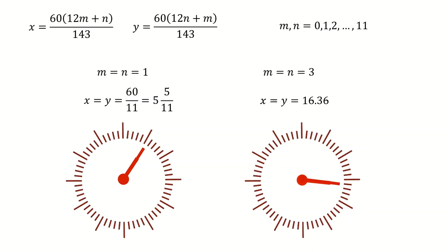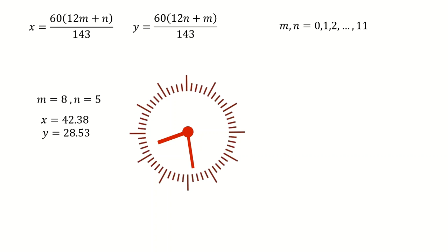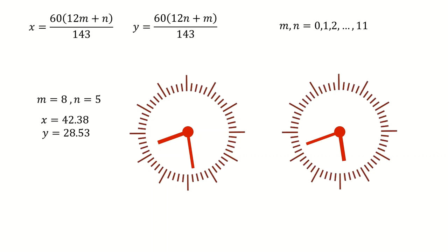But we can have also different examples where m and n are different numbers. Let's see an example where m is 8 and n is 5. And that is almost 28 and a half minutes past 8 o'clock. If you swap the two hands, you still get a valid time. It's about 18 and a half minutes to 6 o'clock.